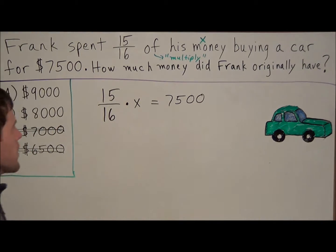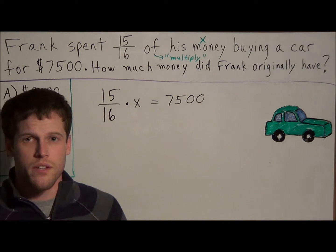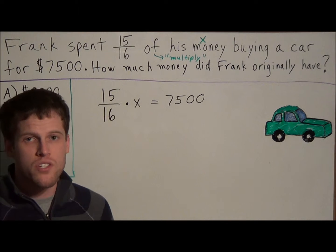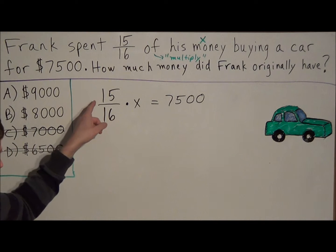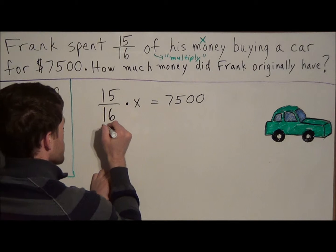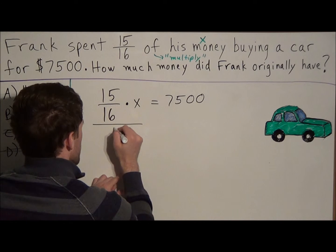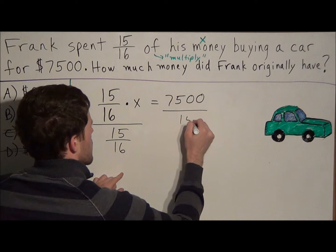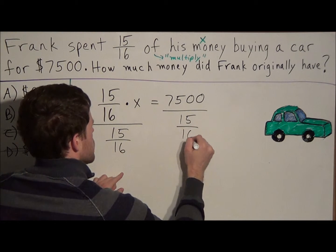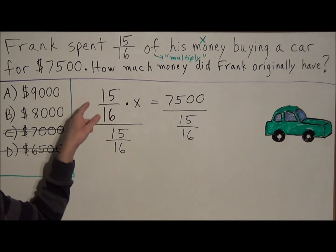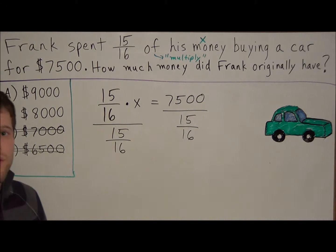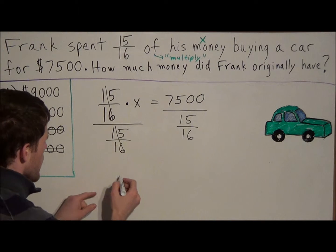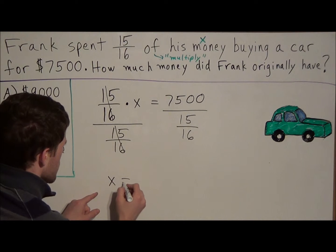So now this is a basic equation, although we do have a fraction with it. So we think, how do we get rid of multiplication? The opposite of multiplication is division. So to get rid of this 15 over 16, we're going to divide both sides by 15 over 16. So you notice on the left hand side, 15 over 16 divided by 15 over 16 will cancel out, and we're left with X equals,